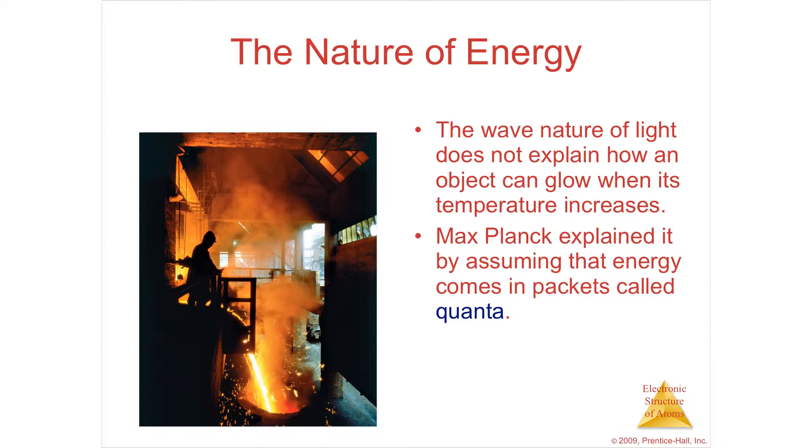One was called black body radiation, which is when you heat something, it'll glow. So if you heat metal up very, very hot, it'll turn red, or another color, or white. That's called black body. Just because light's a wave, that didn't explain that at all.